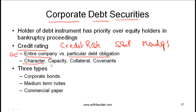Next is the capacity to pay, which is usually the most important. Here rating entities look at various ratios such as liquidity ratios, solvency ratios, and interest coverage ratios, and essentially evaluate the capacity or ability of the company to make the promised payments.